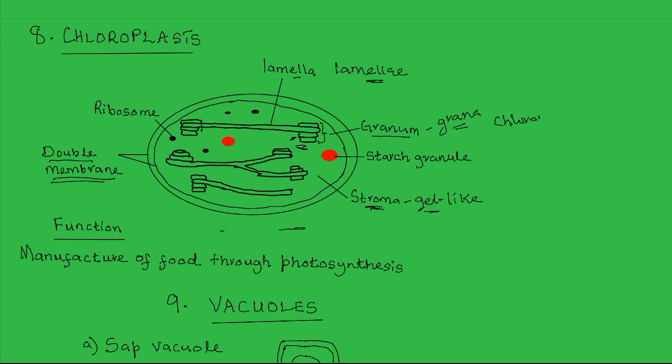Chlorophyll is a molecule. It is a green pigment. A pigment is a colored body. Within the granum, there are many chlorophyll molecules.